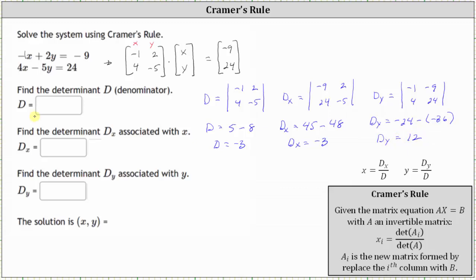Now we have the information we need to solve the system using Cramer's rule. Let's record d, d sub x, and d sub y: d is equal to negative three, d sub x is equal to negative three, and d sub y is equal to 12. To solve the system, x equals d sub x divided by d, and y equals d sub y divided by d.